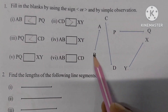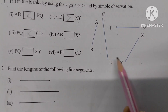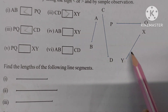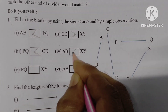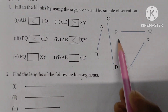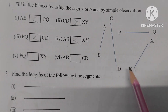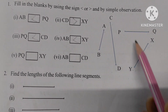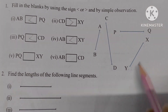This line segment is AB and this one is XY. We find that AB is smaller than XY. By observation, we find that XY is greater than PQ, which means PQ is smaller than XY.